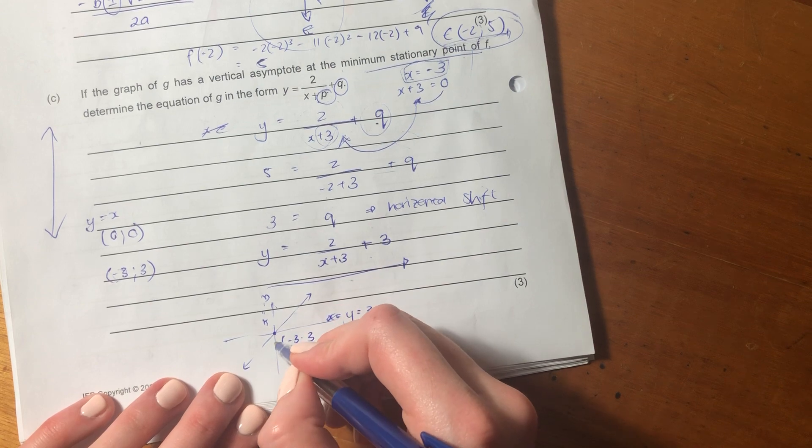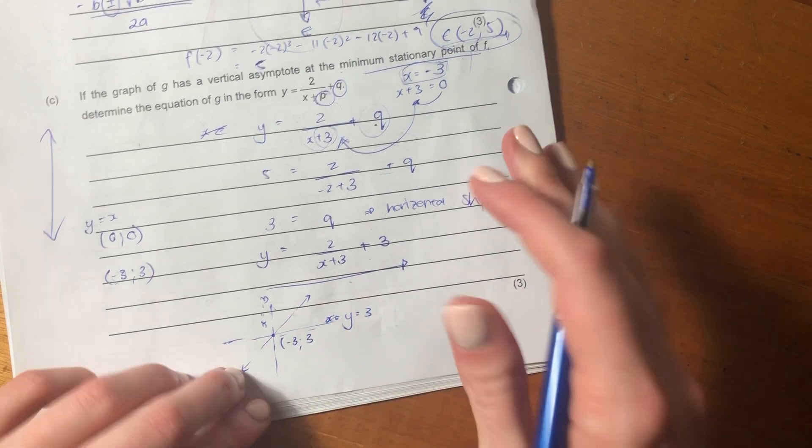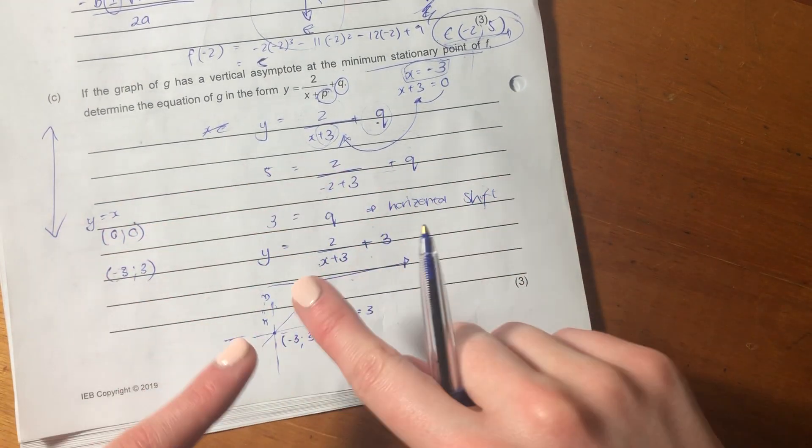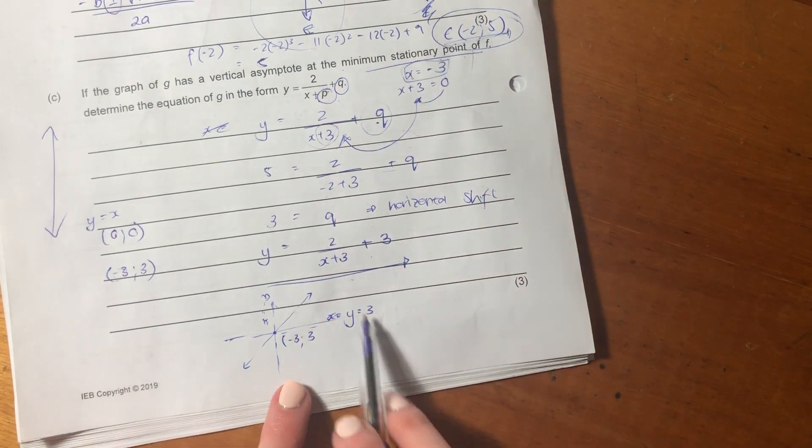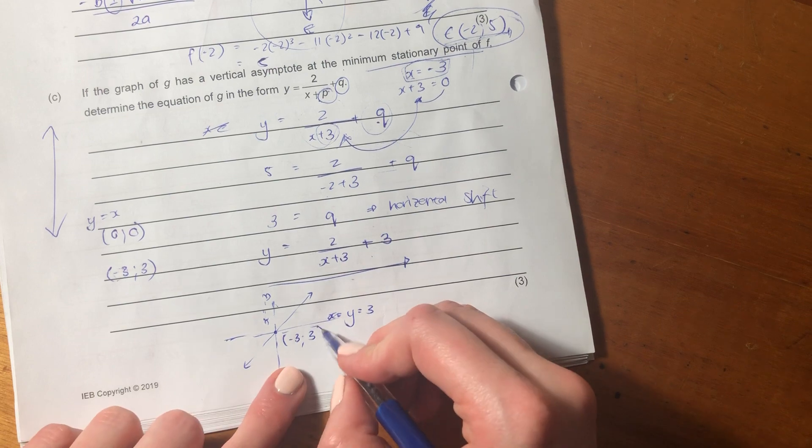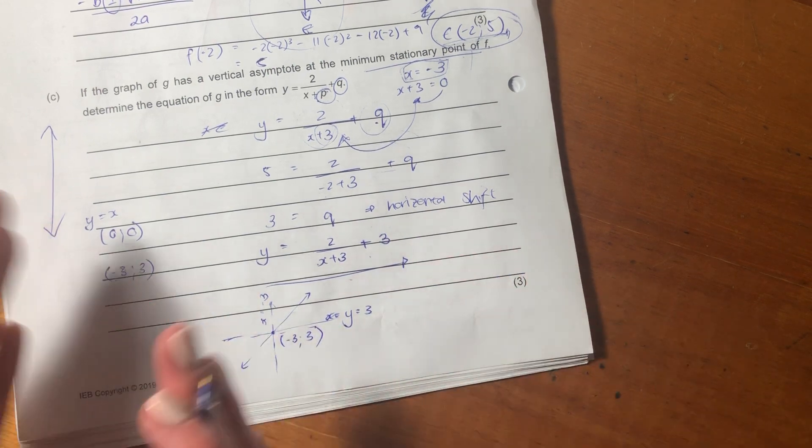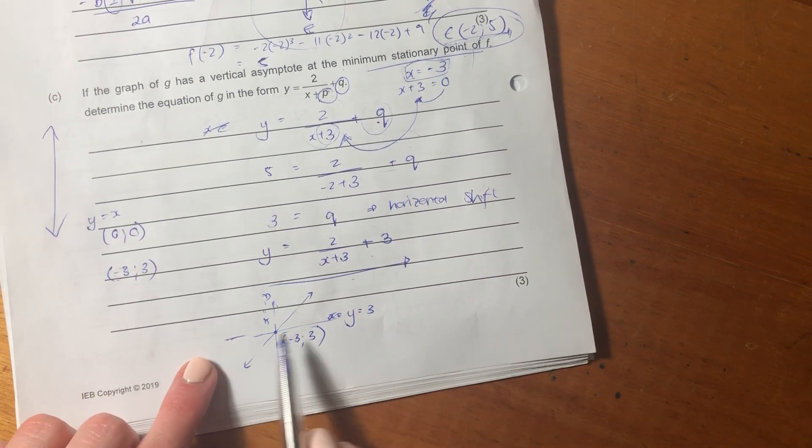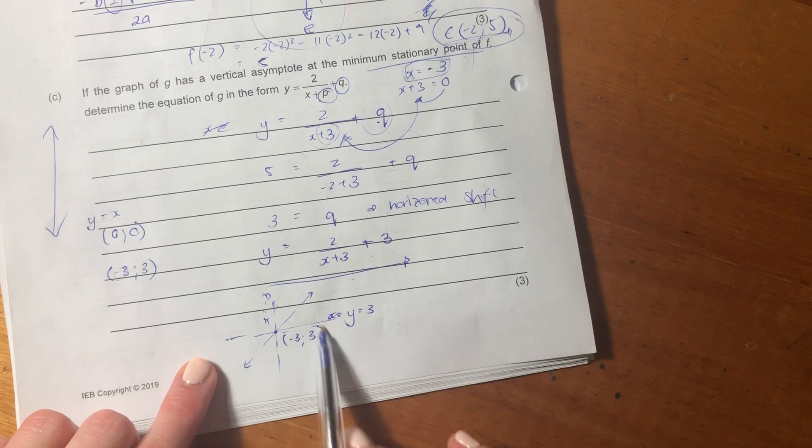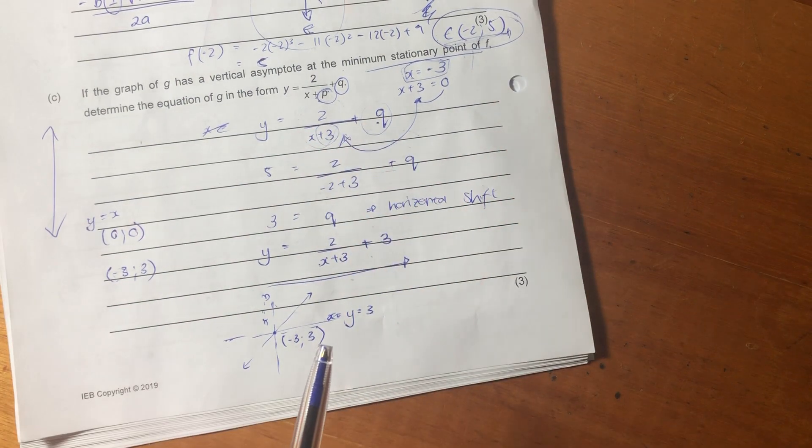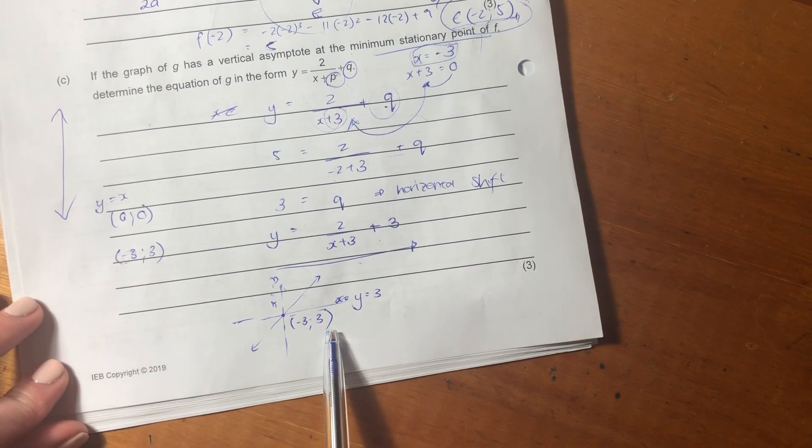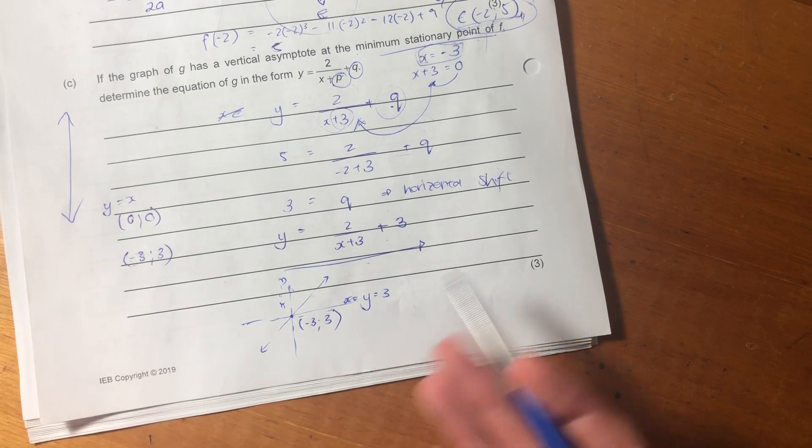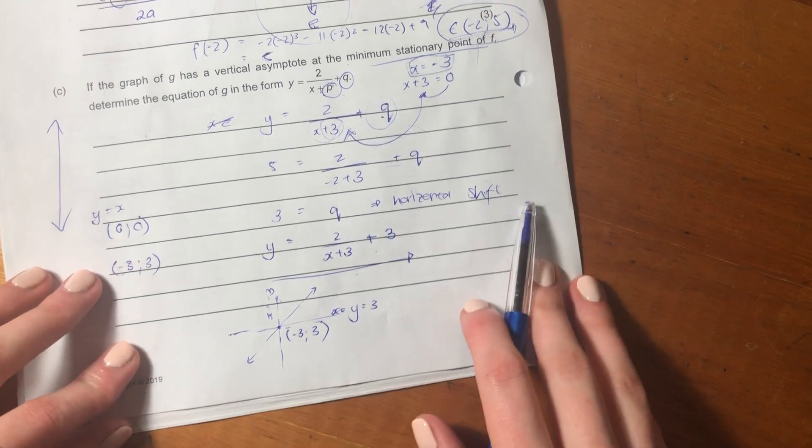We see the Y equals X line goes through the origin, which is the point that the two asymptotes are for a hyperbola that hasn't been shifted. But this hyperbola has been shifted, and the point of intersection, so that origin point for this Y equals X line, transformed or shifted for this particular scenario, would now no longer be 0 and 0. It would actually be negative 3 and 3.